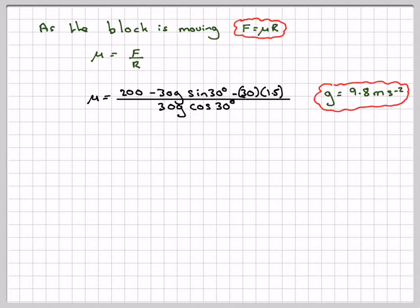Top part, G is 9.8 meters per second squared. Top part comes to 8. So it's going to be 8 divided by 30G cos 30 which is 0.03142, which is equal to 0.0314.